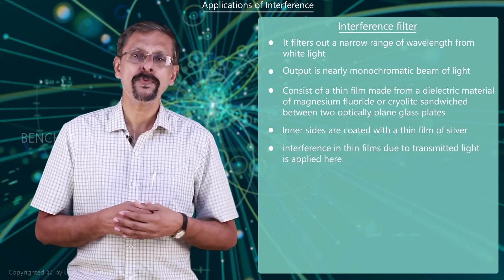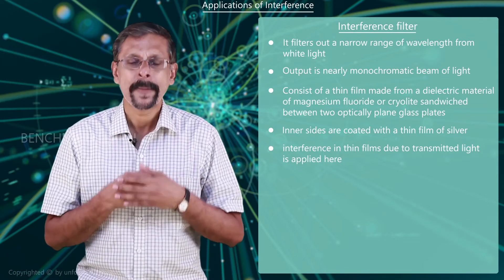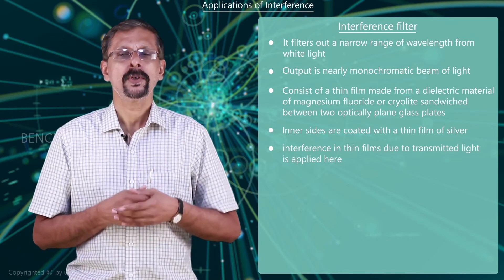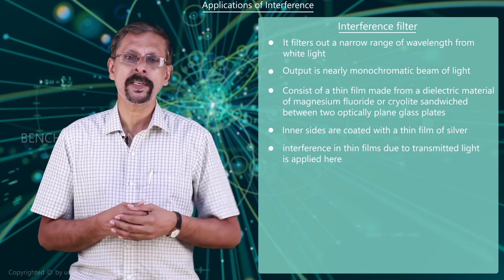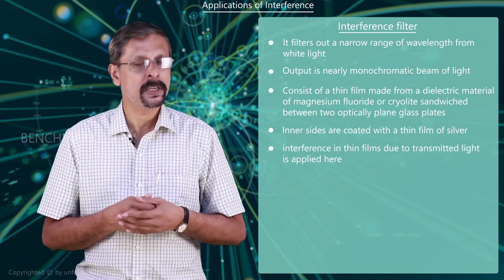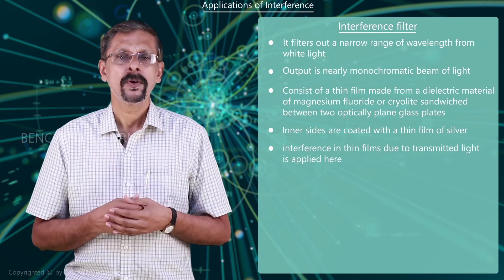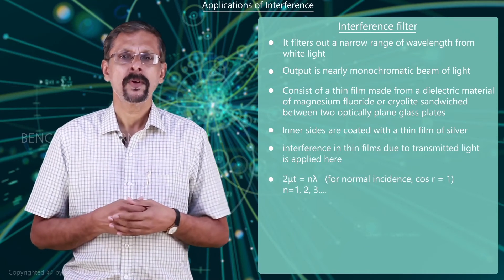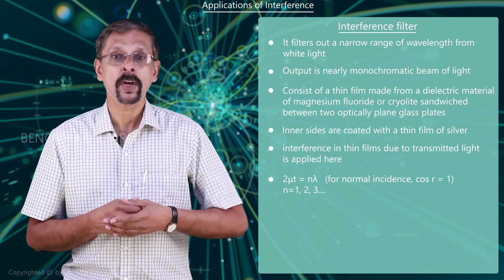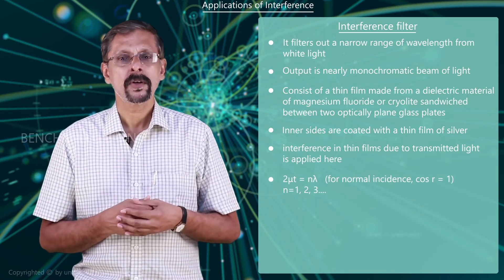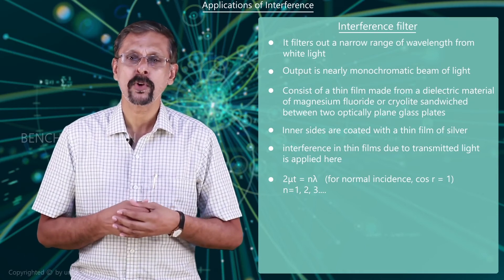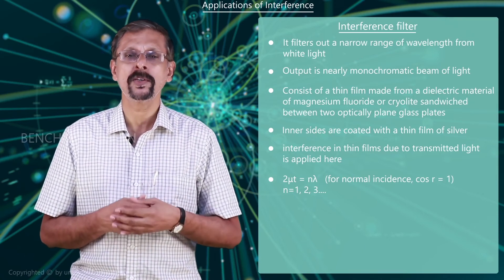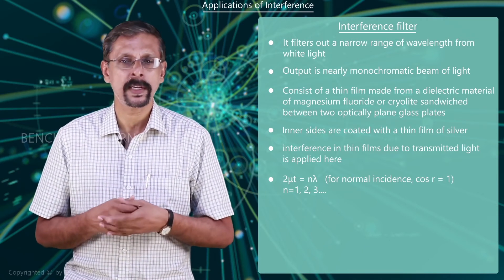The equation for maxima in thin film interference due to transmitted light is given by 2μt = nλ. For normal incidence, cos r is equal to 1, where n = 1, 2, 3, etc.